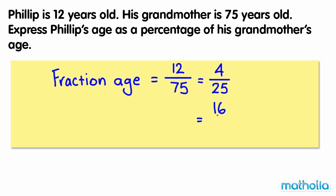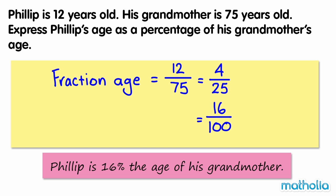Multiplying the numerator and the denominator by 4 gives 16 over 100. 16 one-hundredths equals 16%. So Philip is 16% the age of his grandmother.